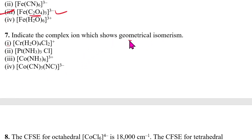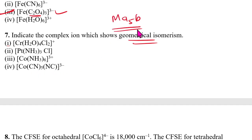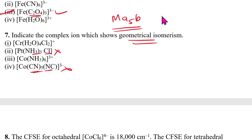Seventh question: indicate the complex ion which shows geometrical isomerism. Remember, MA₅B type cannot show geometrical isomerism, and MA₃B type also cannot show it. Only the complex of the appropriate type can show geometrical isomerism. So the answer for this question is option 1.